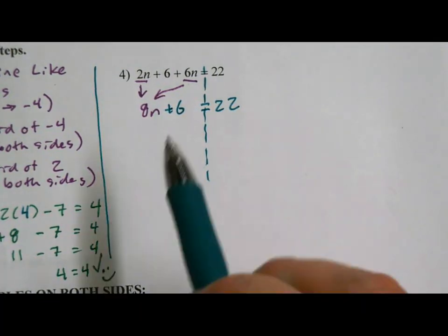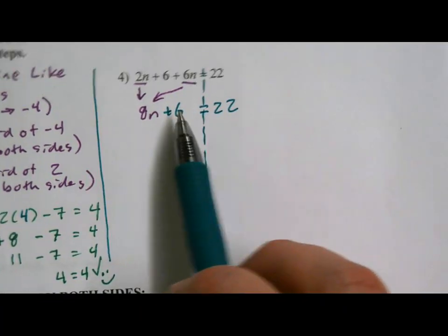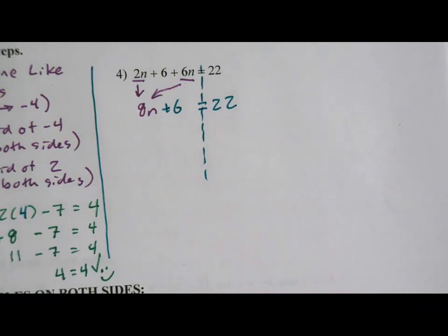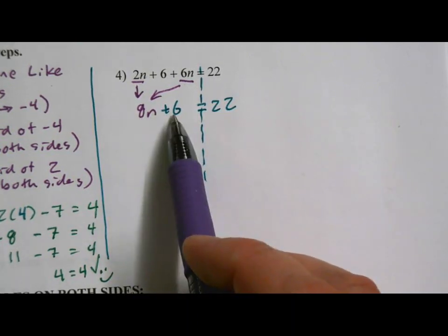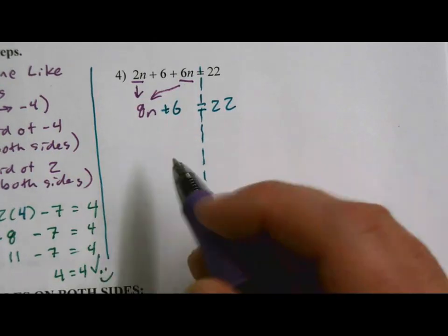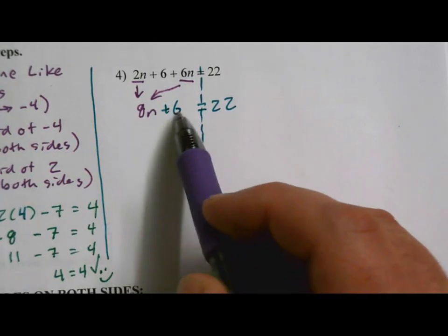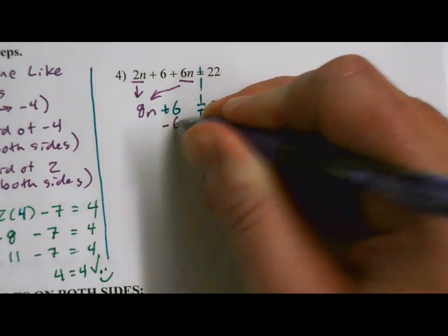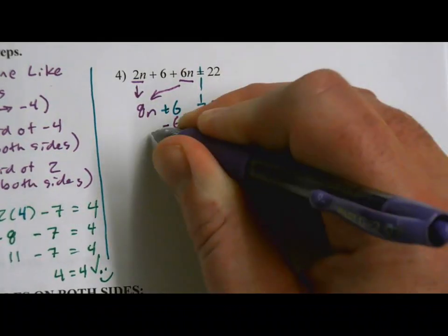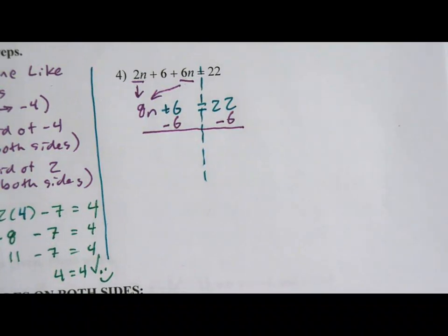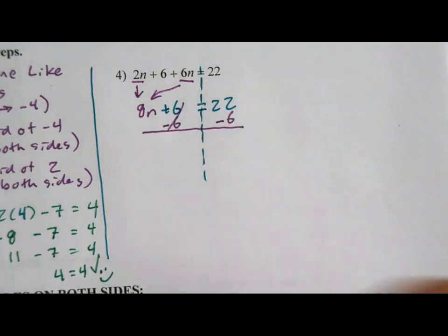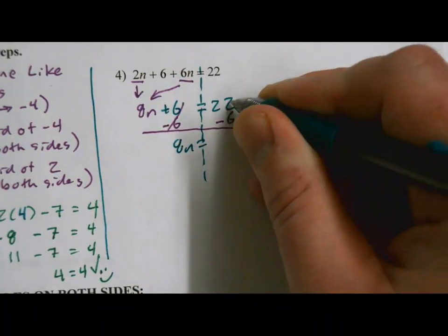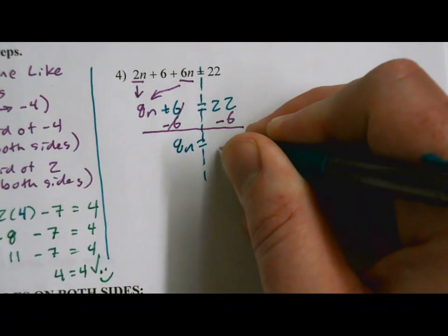Is there anything else for us to combine here? I'm not seeing anything. So let's go on to our next step. Well, we want to start working to solve this. So I need to get rid of this 8 and this plus 6. The 8 is multiplying. The 6 is adding. Usually we do addition and subtraction first. So what's the opposite of plus 6? That would be minus 6. So let's do minus 6 on both sides. Plus 6 minus 6 cancels. That leaves us just with the 8n on this side. Equals 22 minus 6 is 16.